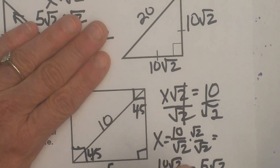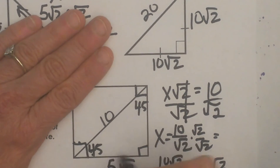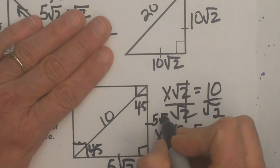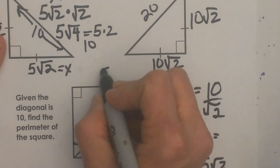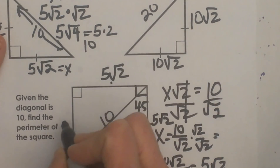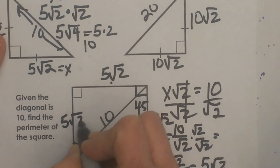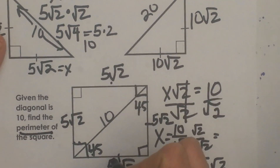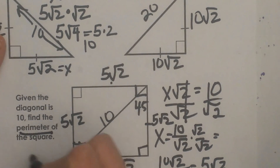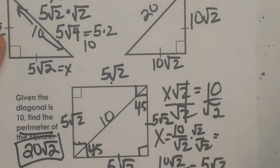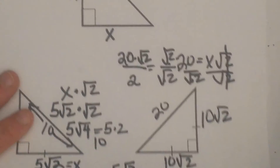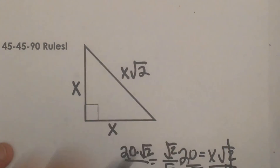So that side is 5 root 2. Because it is an isosceles triangle, the other leg is also 5 square root 2. That means all four sides of the square are 5 square root 2. To find the perimeter you add them all up: 5, 10, 15, 20 — so the perimeter is 20 square root 2. That is how you use the rules for 45-45-90 to help you solve problems on the SAT.